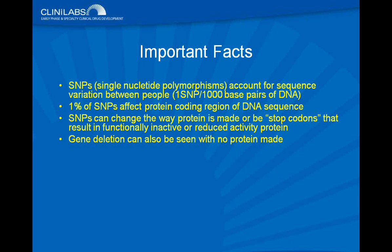In pharmacogenetics and genomics we talk about SNPs — single nucleotide polymorphisms — which account for sequence variation between people. There is about one SNP per 1,000 base pairs of DNA. One percent of SNPs affect the protein-coding region. SNPs change the way the protein is made; they can be stop codons, result in functionally inactive or reduced-activity protein, or cause gene deletion where no protein is made. Essentially, SNPs tell the body its blueprint, and we can identify a SNP to characterize a specific characteristic, whether a transporter, drug metabolizing enzyme, receptor, or even a physical trait.